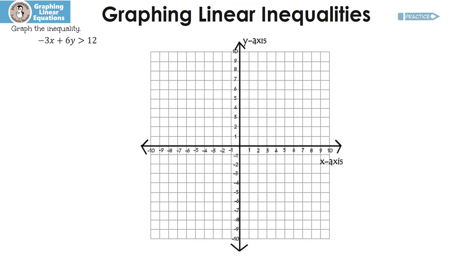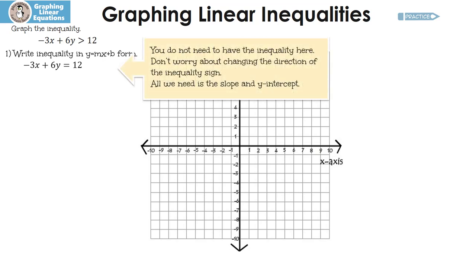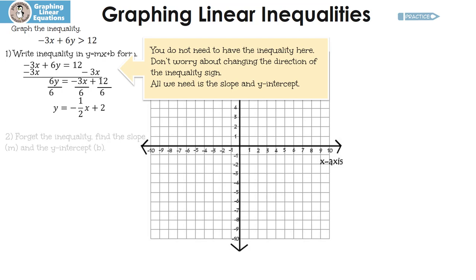Here's another one to practice. Pause the video, graph the inequality, and then press play to check. Alright, let's see how you did. Hopefully you noticed the first thing you had to do was put it into slope-intercept form. The inequality doesn't matter at this point — all we need to do is find the slope and the y-intercept. I'm going to subtract 3x from both sides to get 6y equals negative 3x plus 12. I need y by itself, so I divide each term by 6, and I end up with y equals negative 1 half x plus 2. That looks exactly like y equals mx plus b. Our slope is negative 1 half and our y-intercept is 2.